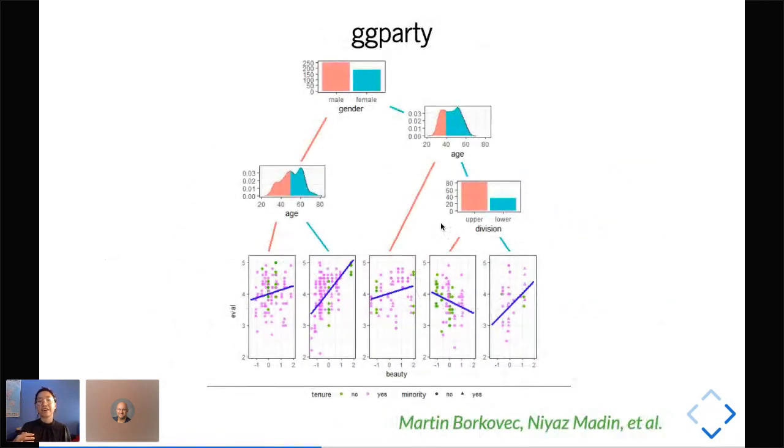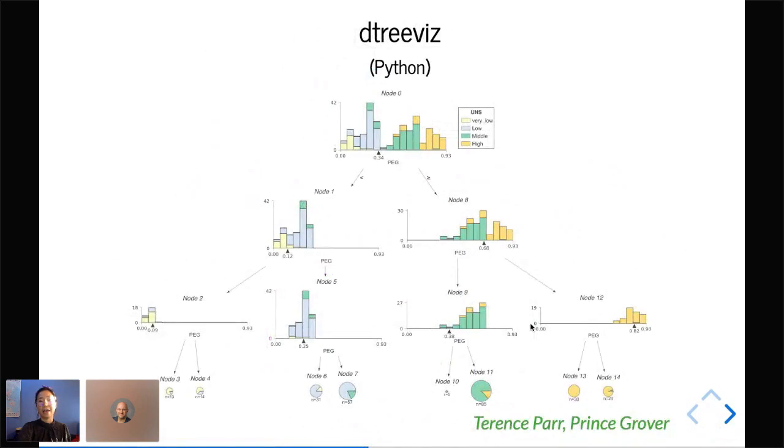ggparty is another package that goes one step further, allows you to do histogram or density plot in the inner nodes and scatter plots on the leaf nodes. I want to give one more mention to a Python library called dtreeviz, which does really nice plots. I really like the idea here where you have stack histograms on the inner nodes and pie charts at the leaf nodes. With these pie charts, you can see how many samples are there in each leaf node and how accurate they are.